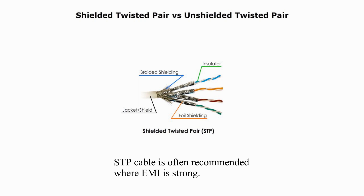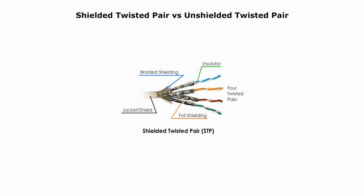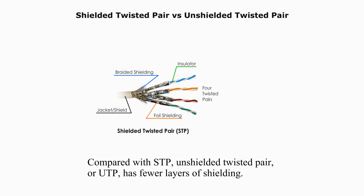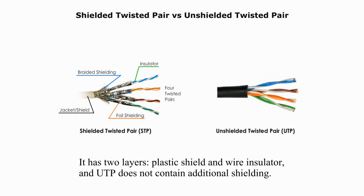Each copper conductor wire is also covered by a plastic insulator. STP cable is often recommended where EMI is strong. In structured cabling, STP cables are normally used for horizontal cabling. Compared with STP, unshielded twisted pair or UTP has fewer layers of shielding. It has two layers: plastic shield and wire insulator, and UTP does not contain additional shielding.